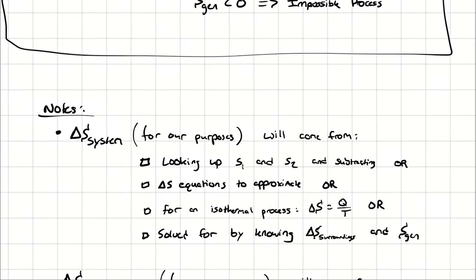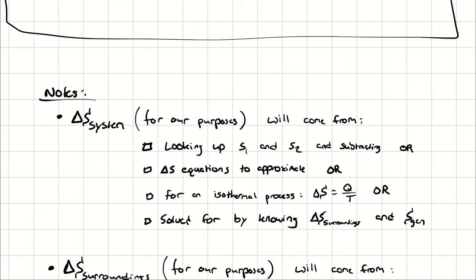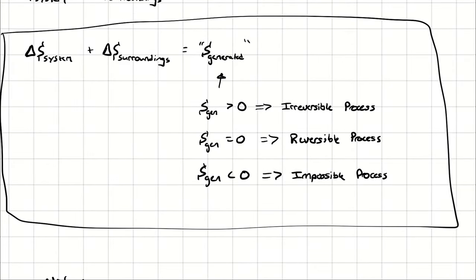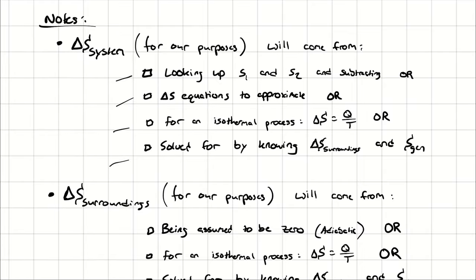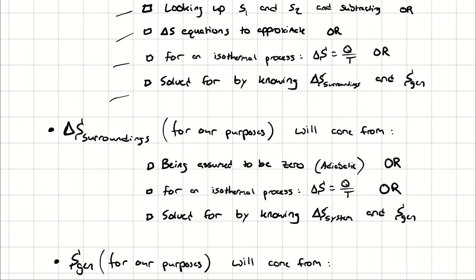A couple of notes on those quantities. The entropy change of the system will come either from looking up S1 and S2 and subtracting them, using delta S equations to approximate them — primarily by assuming constant specific heats — using the definition of entropy for an isothermal process where T comes out of the integral leaving just Q/T, or will be solved for by knowing the entropy change of the surroundings and the entropy generated. For the entropy change of the surroundings, we will either determine that from the same isothermal process simplification, by treating it as zero in the case of an adiabatic process — adiabatic means no heat transfer, therefore we are not affecting the entropy on the other side of our boundary — or by knowing the entropy change of the system and the entropy generated by the process.